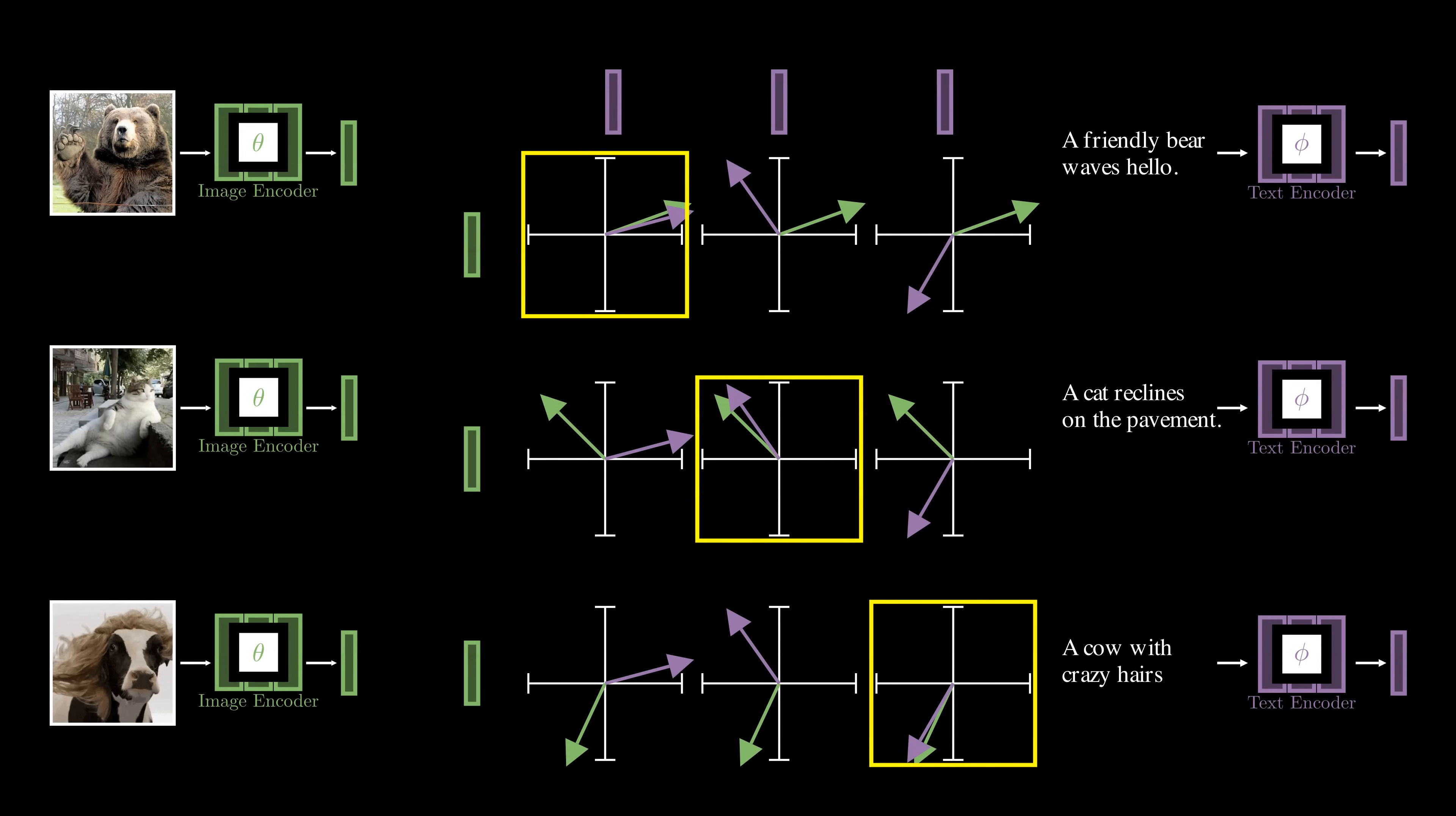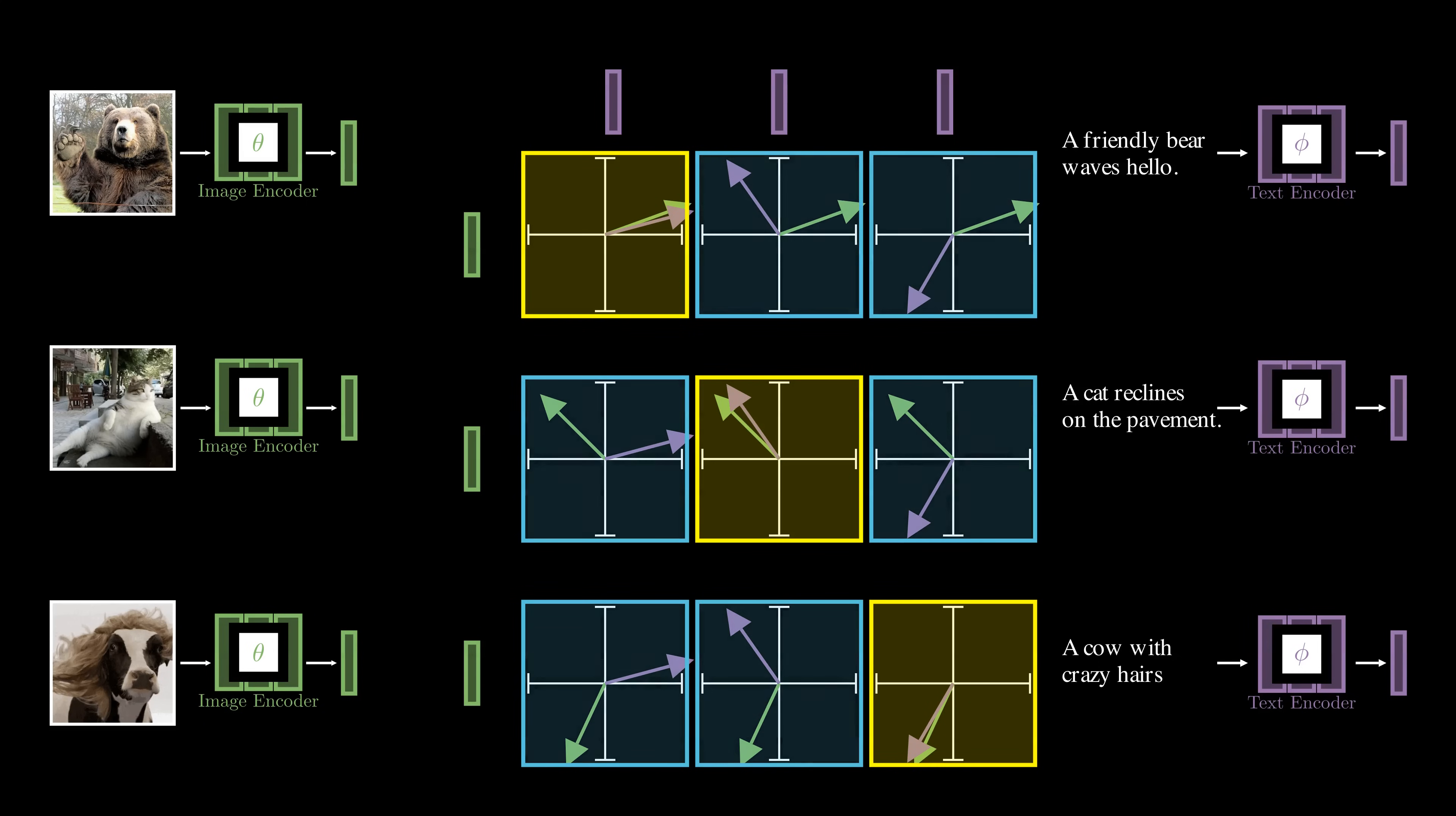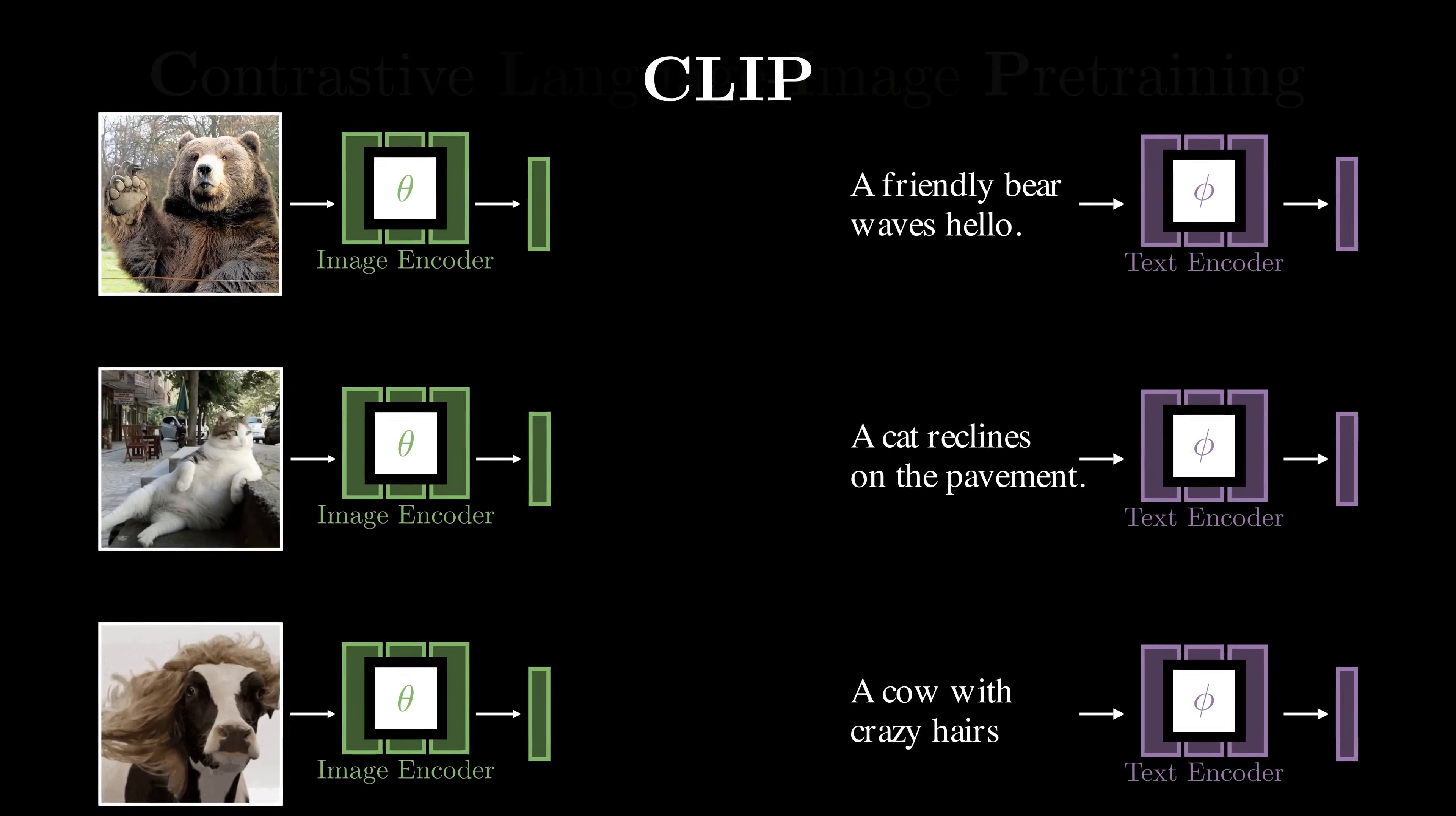This is what we want to see after training. Along the diagonal, the features from matching image text pairs are well aligned. Off the diagonal, the features from non-matching pairs become dissimilar. This is known as contrastive language image pre-training, or CLIP. By training on 400 million image text pairs, the image encoder learns to capture and generalize a wide range of visual concepts.